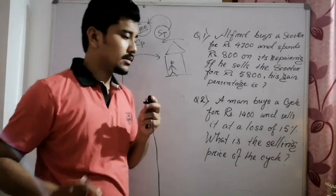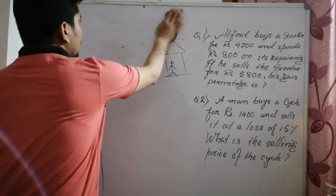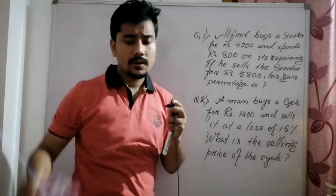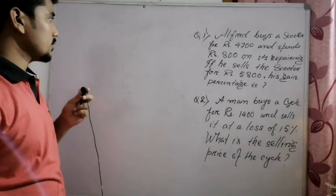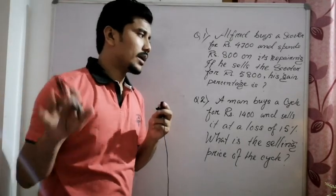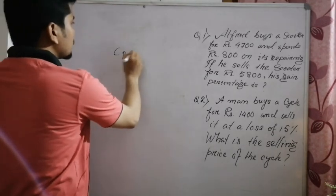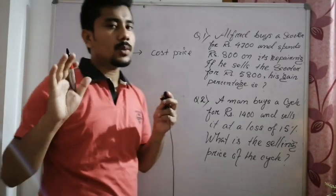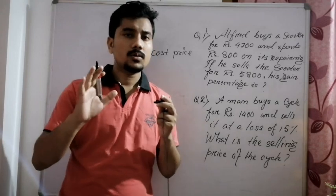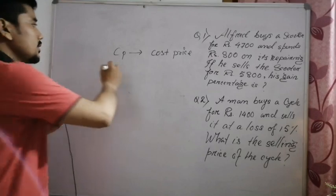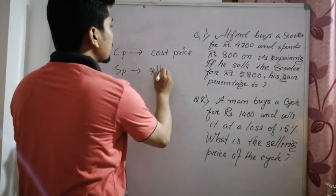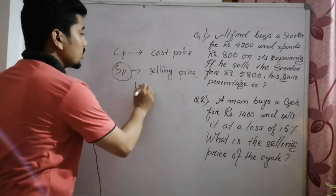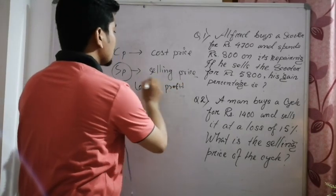Profit and loss — let's solve this. The first thing is that the formula for profit and loss is something I want you to memorize. I've taken a shortcut approach to this formula. The key relationship is: selling price minus cost price gives profit.